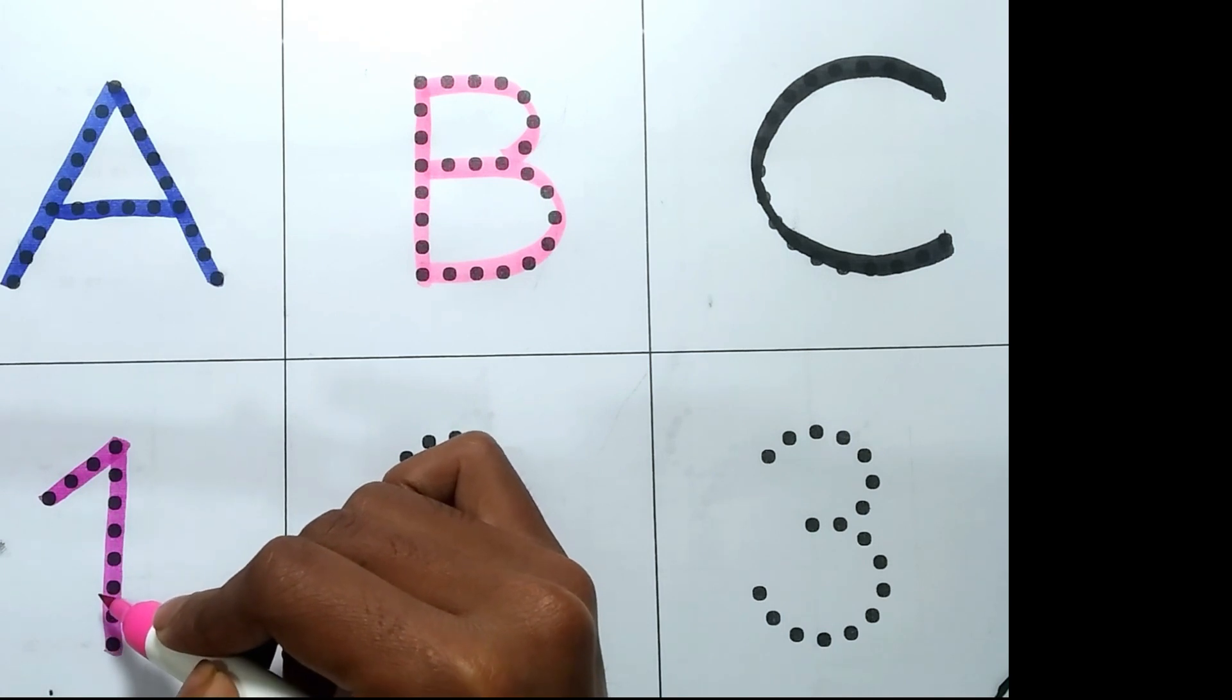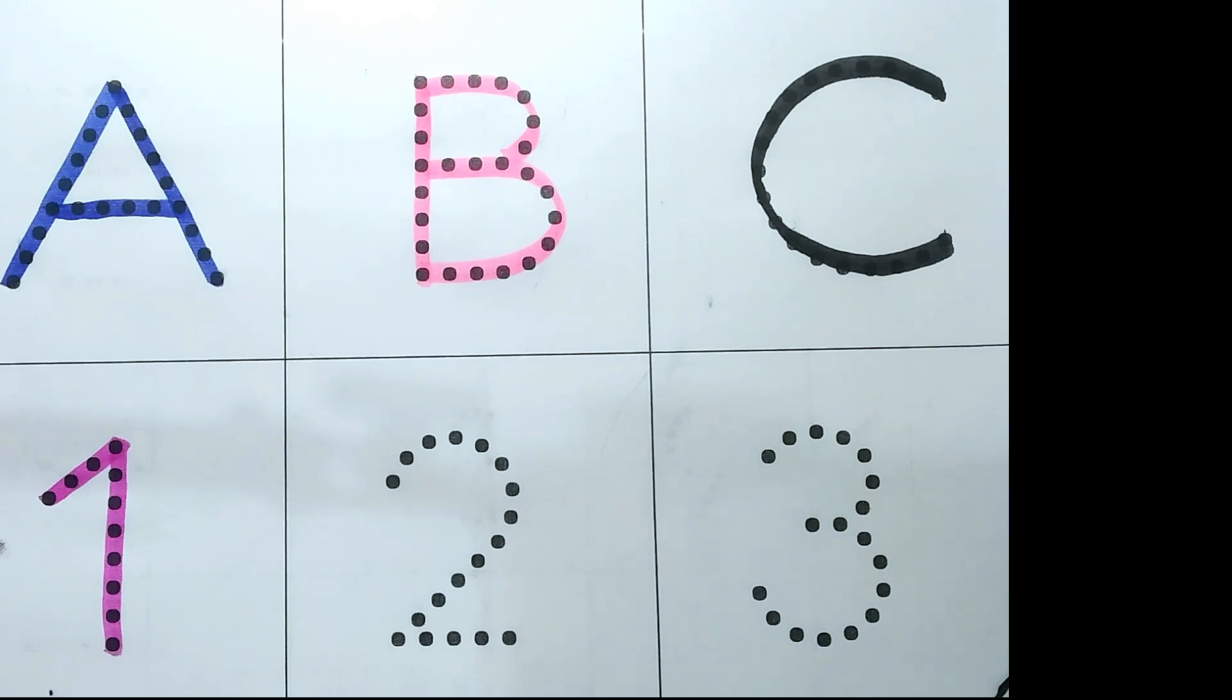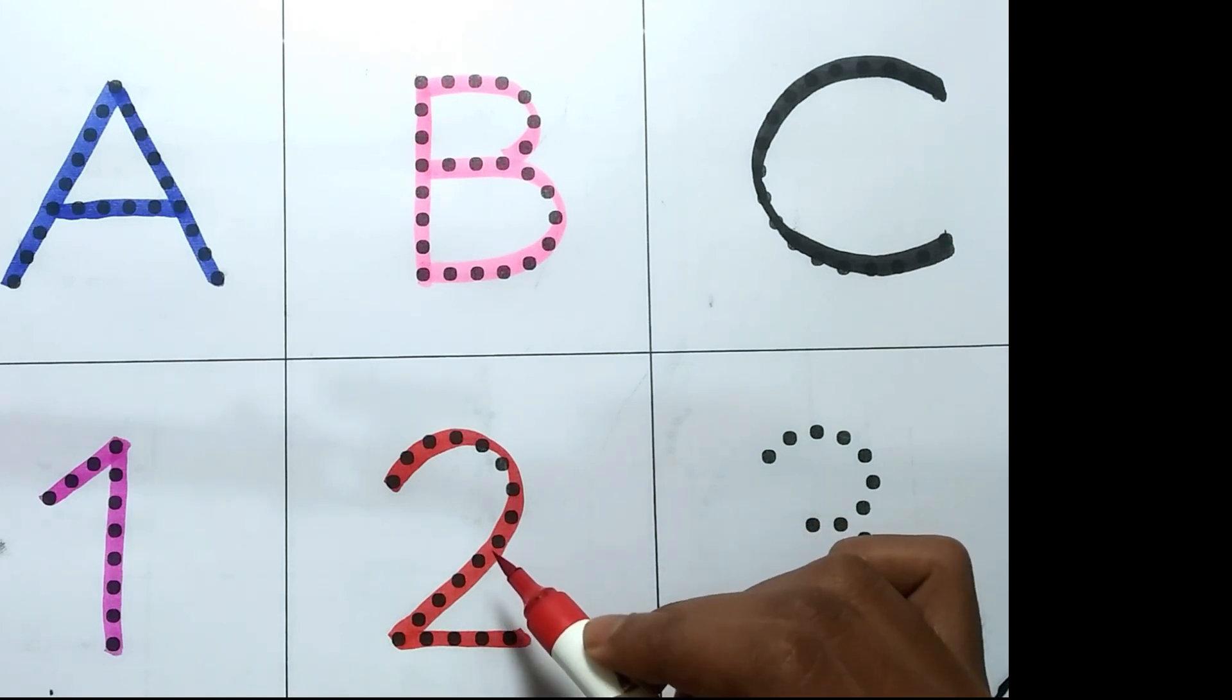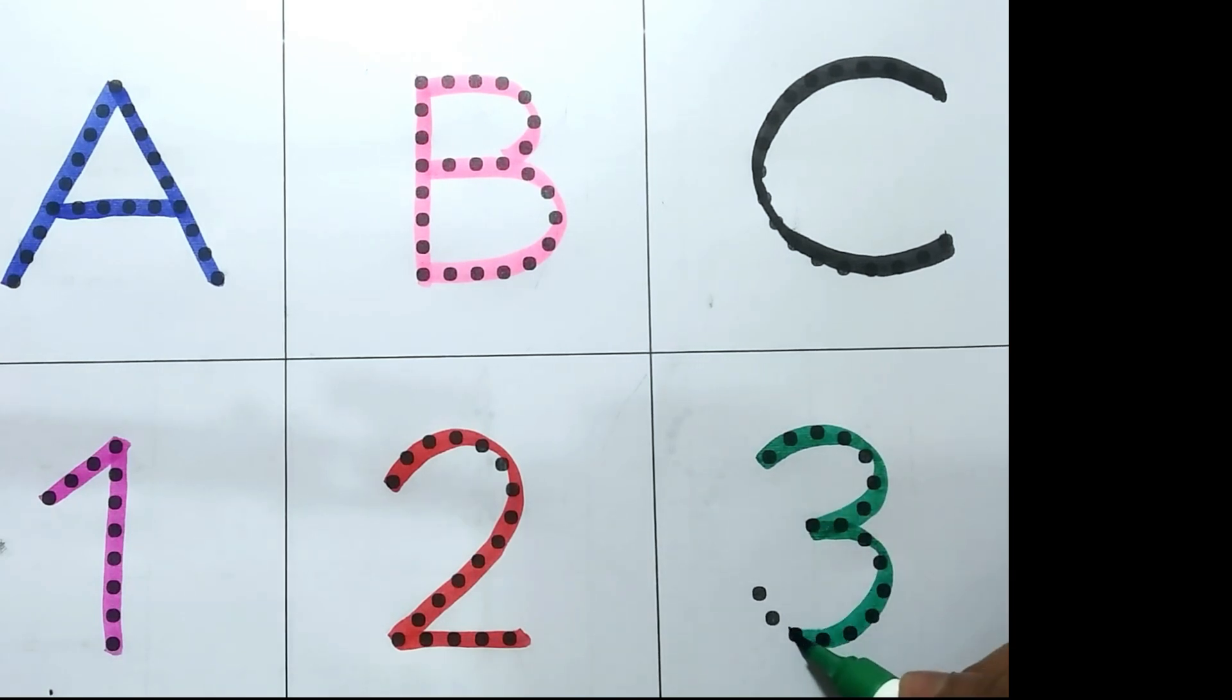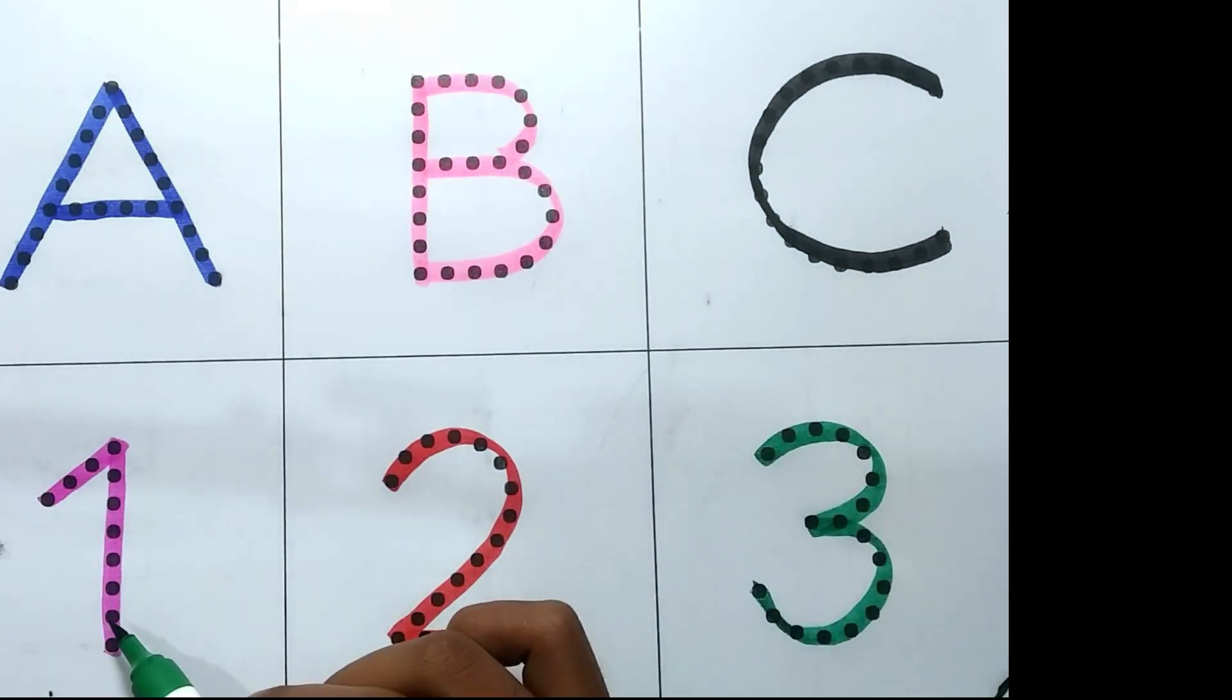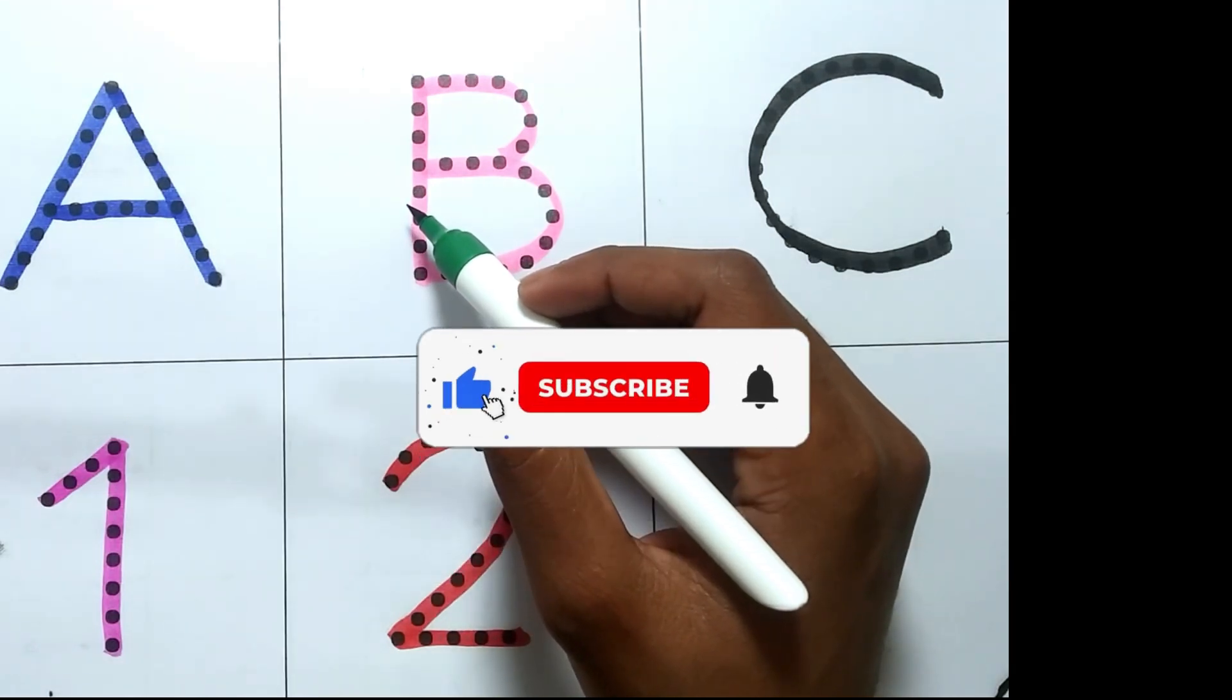One, O-N-E one. Two. Three. ABC, one two three. Please like this video and subscribe to our channel. Thank you for watching.